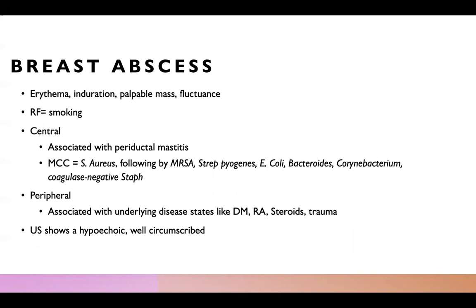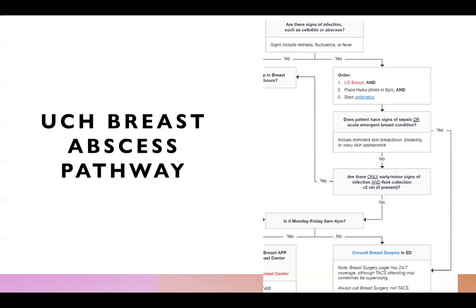The other most common pathogens are listed here. For peripheral breast abscesses, they are typically associated with an underlying disease state like diabetes, rheumatoid arthritis, steroid use, and trauma. An ultrasound will show a hypoechoic well-circumscribed lesion.